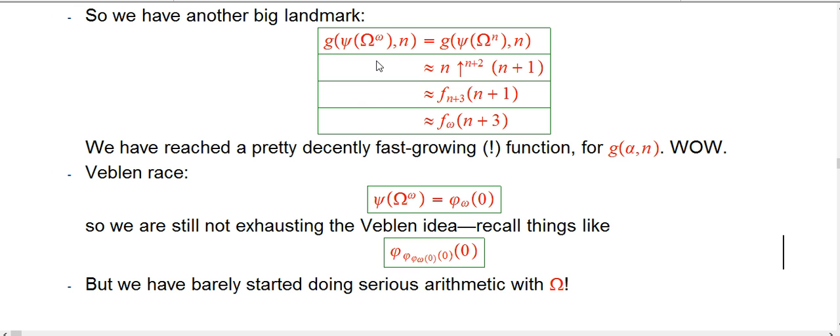Okay, notice that we should have no worries about this psi notation not keeping pace with Veblen or really exceeding it pretty soon because we've barely started to do serious arithmetic with big omega. Yes, we've done exponentiation, but we haven't done iterated exponentiation. And that's where it gets really powerful.